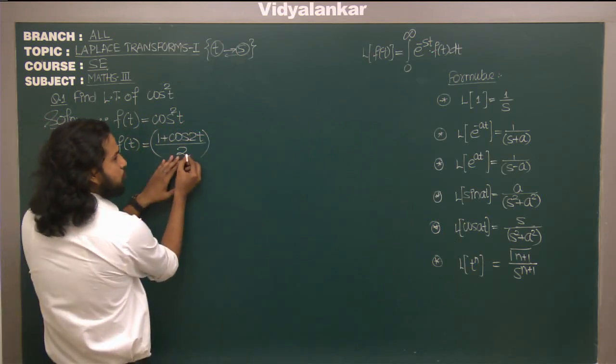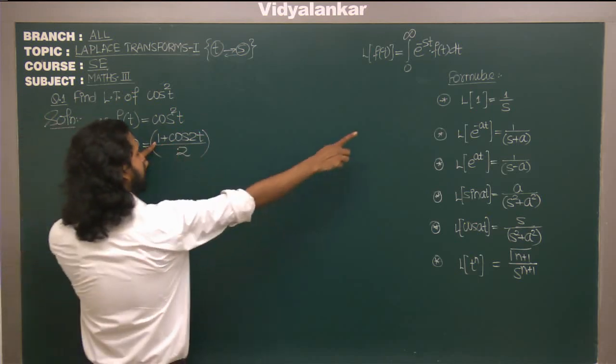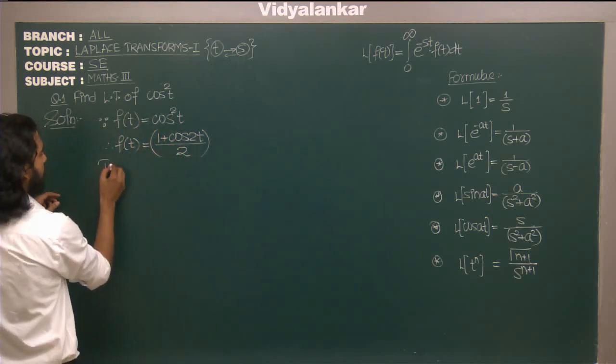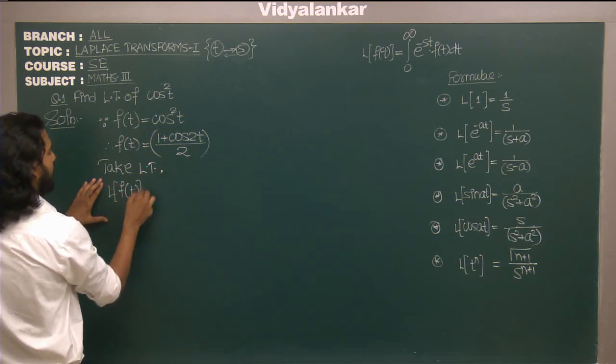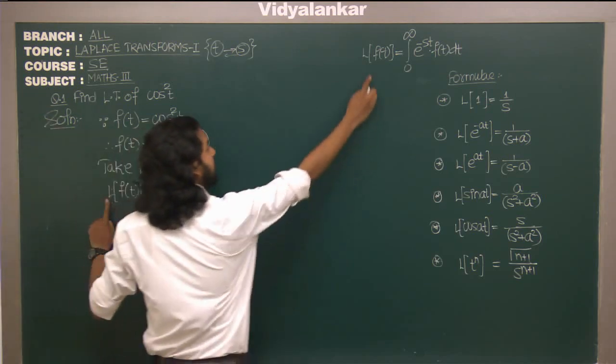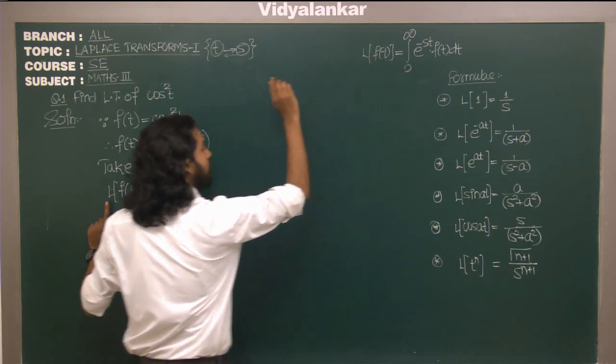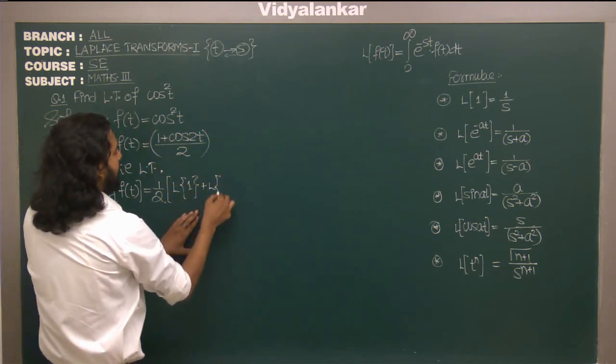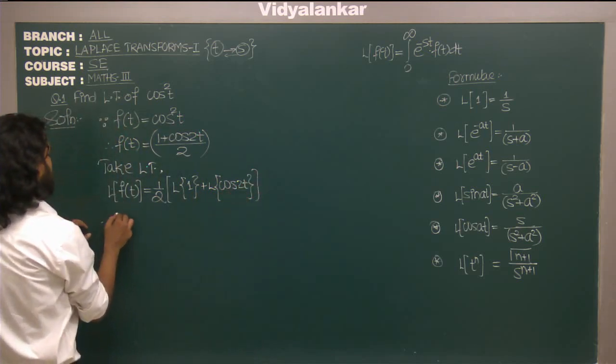So if I convert this, I am getting - yes, this 2 being a constant will always be kept outside. I know Laplace of 1 as well as Laplace of cos t, so I don't have to worry. I will simply take Laplace transform. Laplace of f of t will be half - being a constant can be taken outside because Laplace is nothing but integration, and in integration anything that is constant goes outside.